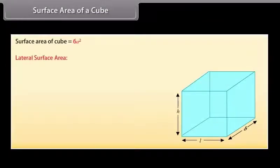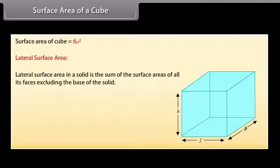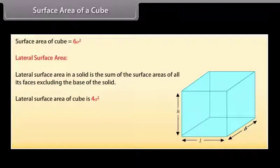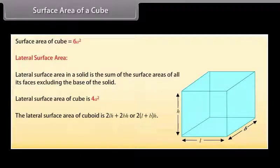Lateral surface area. The lateral surface area of a solid is the sum of the surface areas of all its faces excluding the base of the solid. The lateral surface area of a cube is 4A², and the lateral surface area of a cuboid is 2LH + 2BH, or 2(L + B)H.